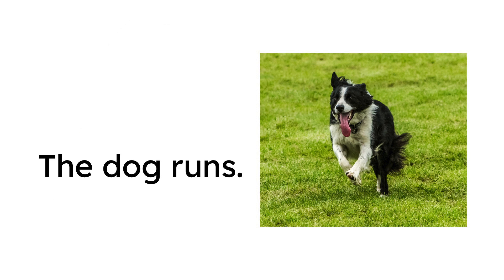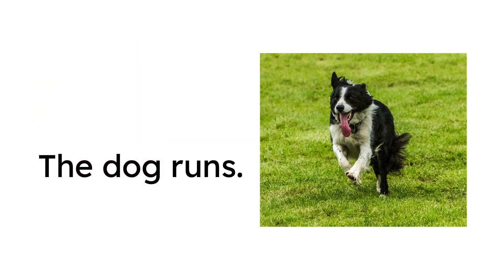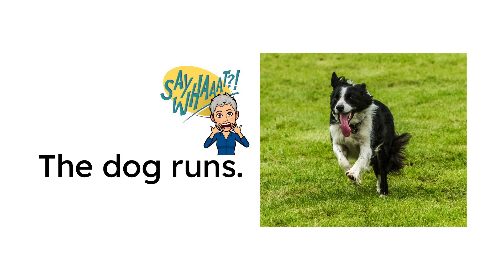A sentence needs a subject. Remember, the subject is the star. Who or what is doing the action? What is the subject of the sentence? The dog. A sentence also needs a predicate. The predicate is what the subject is doing. What is the predicate in this sentence? What is the dog doing? The dog runs — runs is the predicate.